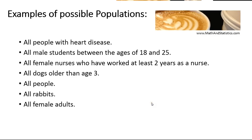Some examples of possible populations might include all people with heart disease. This population might be useful for a medical research group conducting research on medications that help people who have heart disease, so their population of interest would be all people with heart disease. A second example might be all male students between the ages of 18 and 25 — for example, a university creating a special scholarship program for that group, so their population of interest would be all male students between the ages of 18 and 25.